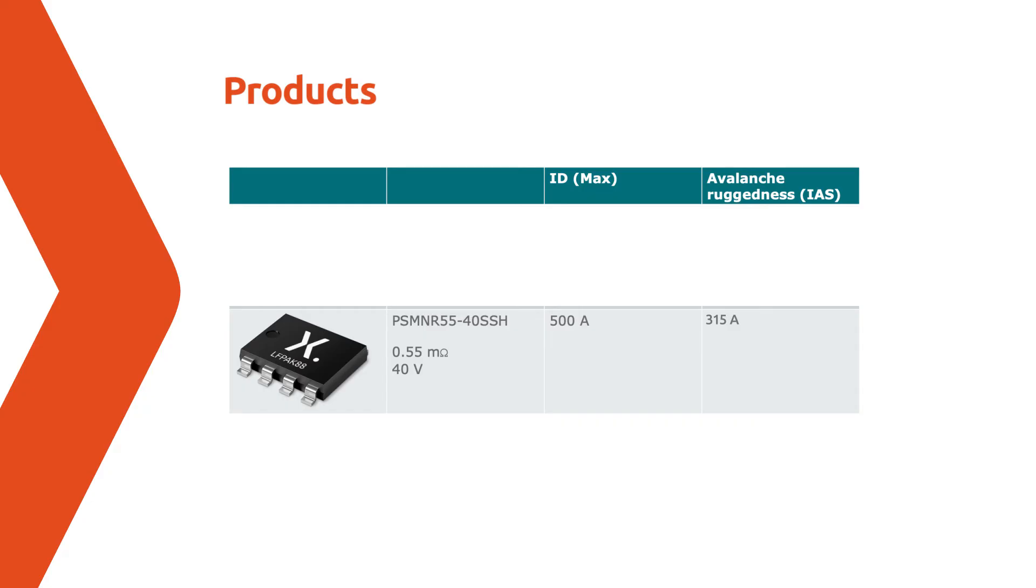With all our power MOSFETs, these values of 380 amps and 500 amps in our datasheets are not theoretical but are real measurements performed in our product measurement lab.